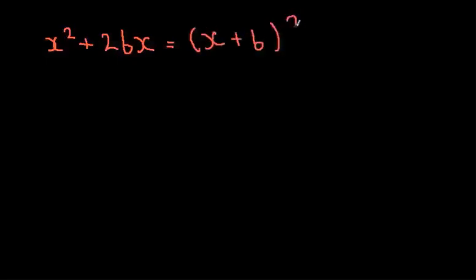Let's start by writing the form for completing the square. It's basically x² + 2bx = (x + b)² - b². This is the generic form you want to remember. This is completing the square.